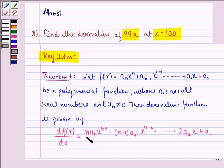by dx equals n into a_n x raised to the power n minus 1 plus (n-1) a_(n-1) x raised to the power n minus 2 and so on till 2a_2 x plus a_1.